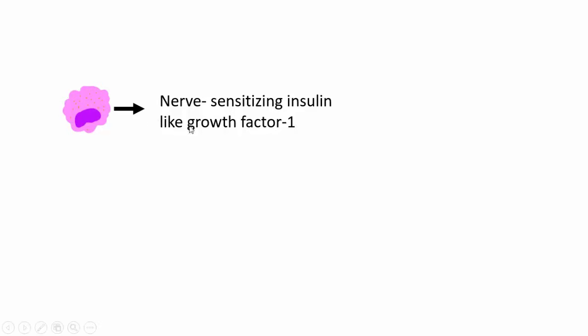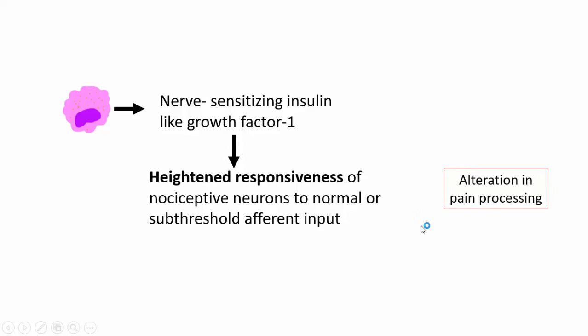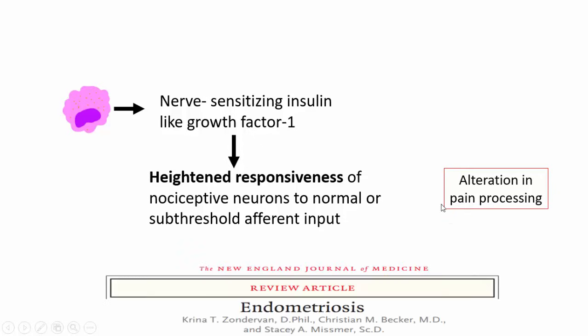Another important aspect of endometriosis is that these patients are very sensitive to pain. The macrophages recruited by the chemokines also secrete nerve-sensitizing insulin-like growth factor 1. This IGF-1 is responsible for heightened responsiveness of nociceptive neurons to normal or subthreshold afferent input, resulting in alteration of pain processing. That is the reason why these patients are highly sensitive to even mild forms of pain. If you want to read more, refer to a recently published article in the New England Journal of Medicine.